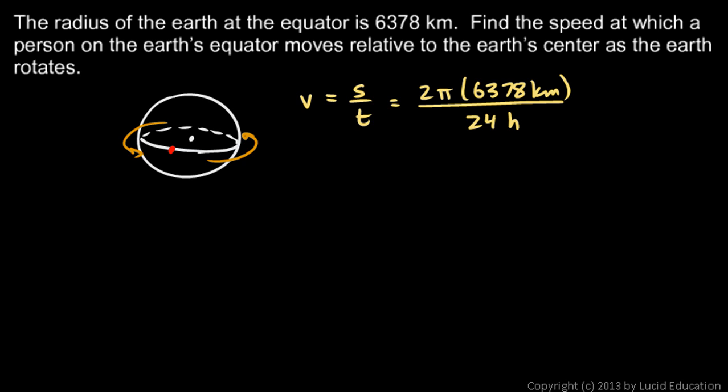So we can just divide that. 2π times 6,378 divided by 24 gives me 1,670 kilometers per hour. That's pretty fast.